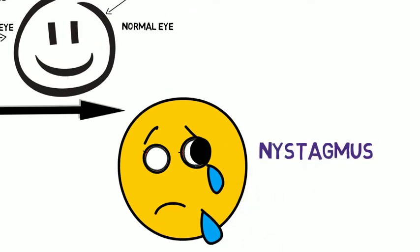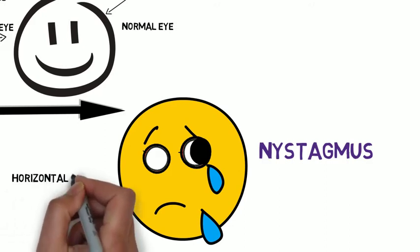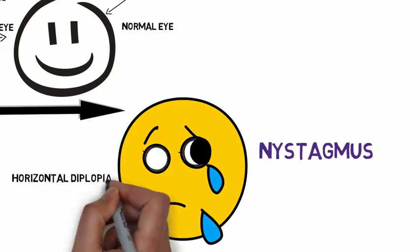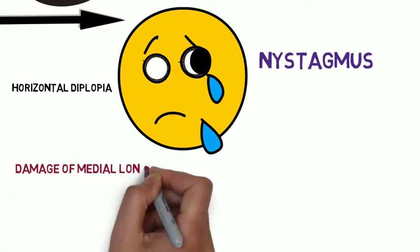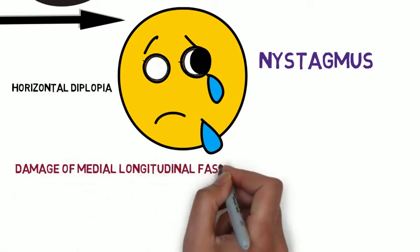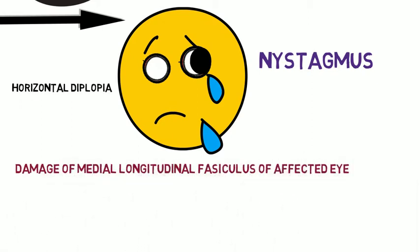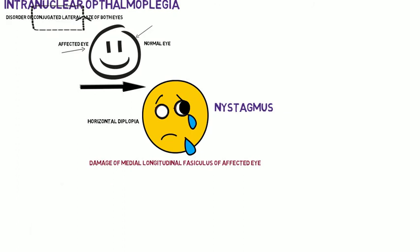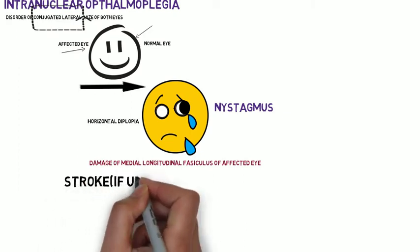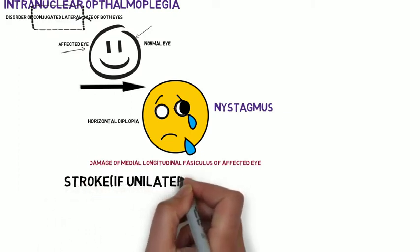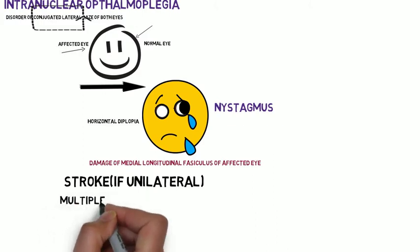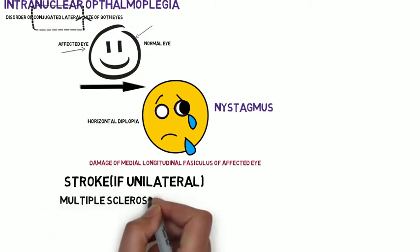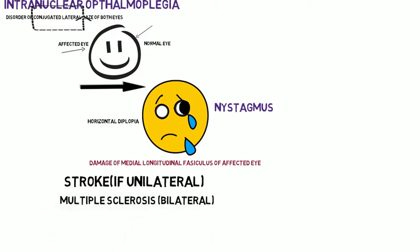The left eye abducts normally but with nystagmus. The patient also complains about horizontal diplopia on looking horizontally. The cause is damage of the medial longitudinal fasciculus of the affected eye — a stroke if it is unilateral, and multiple sclerosis if the damage is bilateral.